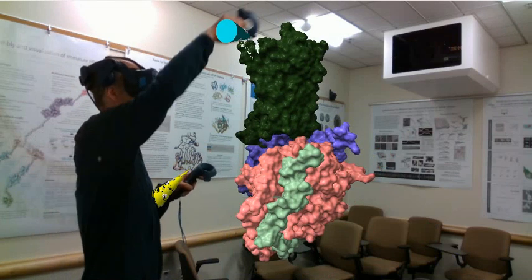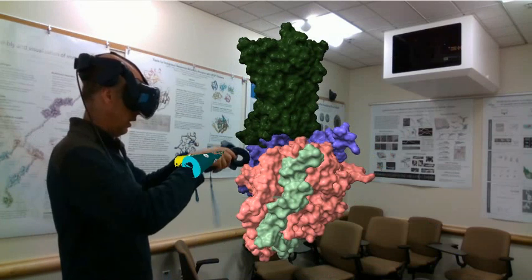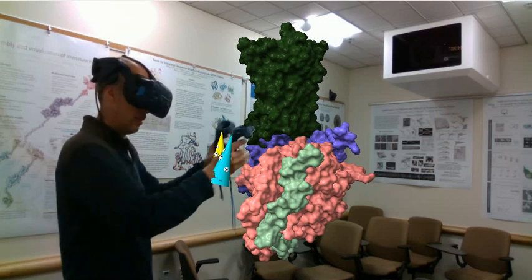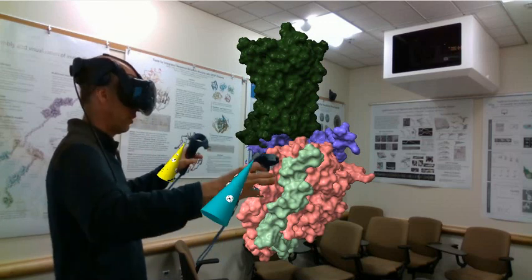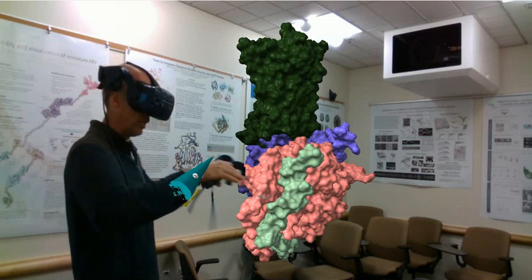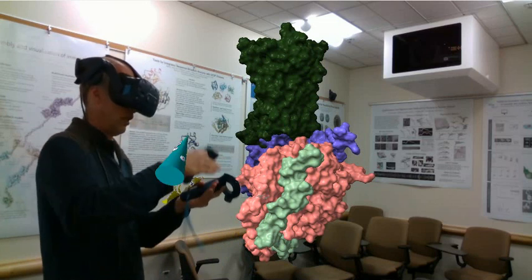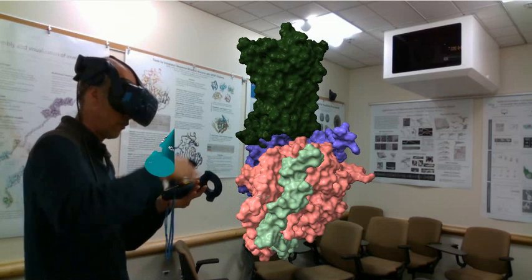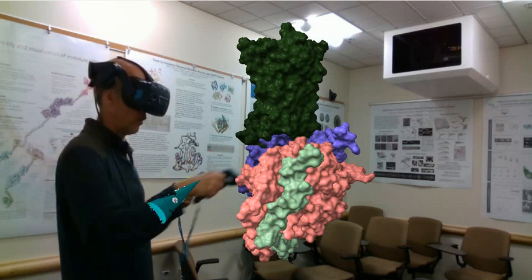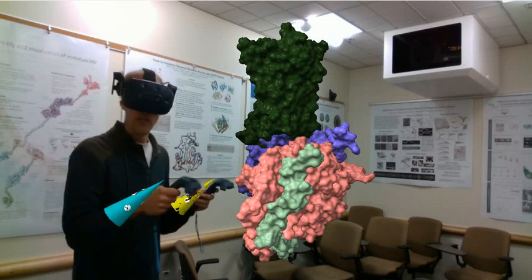When an opioid binds, it releases these G proteins. They're able to move around then on the inside of the neuron on the surface. And they cause changes to how the neurons signal calcium. They affect how calcium and potassium ions flow through the membrane. And they also affect gene expression within the neuron.